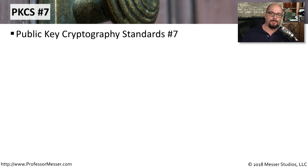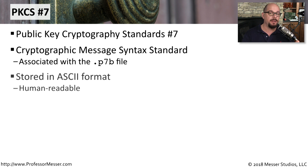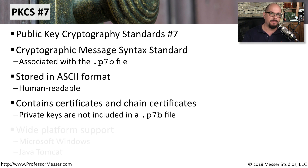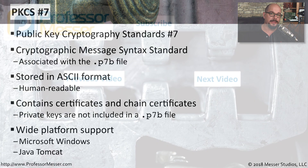Another common file format is PKCS number 7 — the Public Key Cryptography Standards number 7 format. It is associated with a P7B file. This is an ASCII-readable, human-readable formatted file that usually contains a public key and any chain certificates that you may need to add to a web server. Private keys are not usually added to a P7B file. You'll see these P7B file formats used in Microsoft Windows, Java, Tomcat, and many other environments.